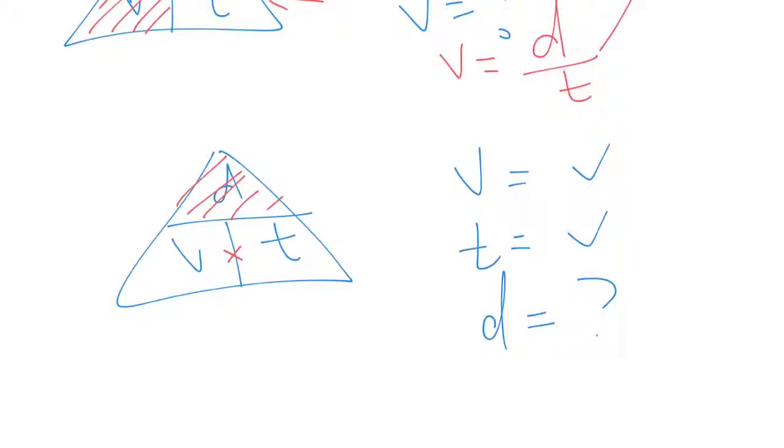We'll give us D equals V times T. And we plug our numbers in and do our calculation. They're not too tricky.